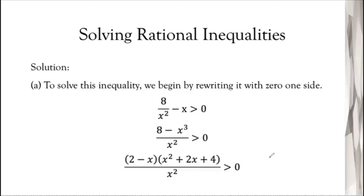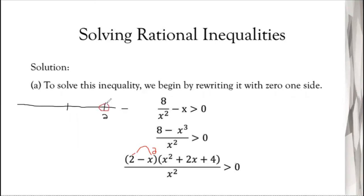Now we find the zeros. From the numerator, setting 2 - x = 0 gives x = 2. So we have one zero at x = 2 on the number line. We use an open circle since the symbol is strictly greater than, not 'or equal to'. The factor x² + 2x + 4 has no real zeros — any real value of x substituted there gives a positive result, so it contributes no additional zeros.